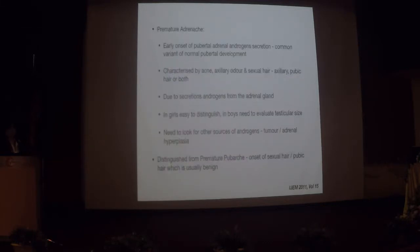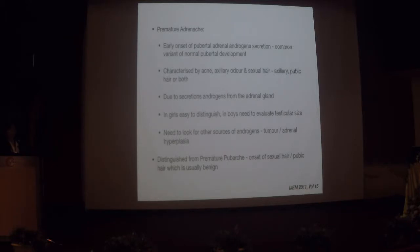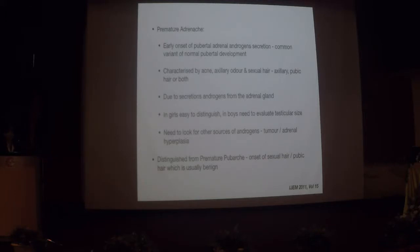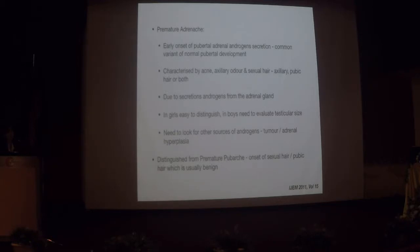Premature adrenarche is the onset of pubertal androgens — a common variant of normal pubertal development. It is characterized by acne, axillary odor, and sexual hair (axillary, pubic, or both), due to androgens from the adrenal gland. If girls present with just premature adrenarche, we need to look carefully for any other source of androgens — whether a tumor or adrenal hyperplasia. There is also premature pubarche, where girls present with pubic hair alone, which is generally benign.